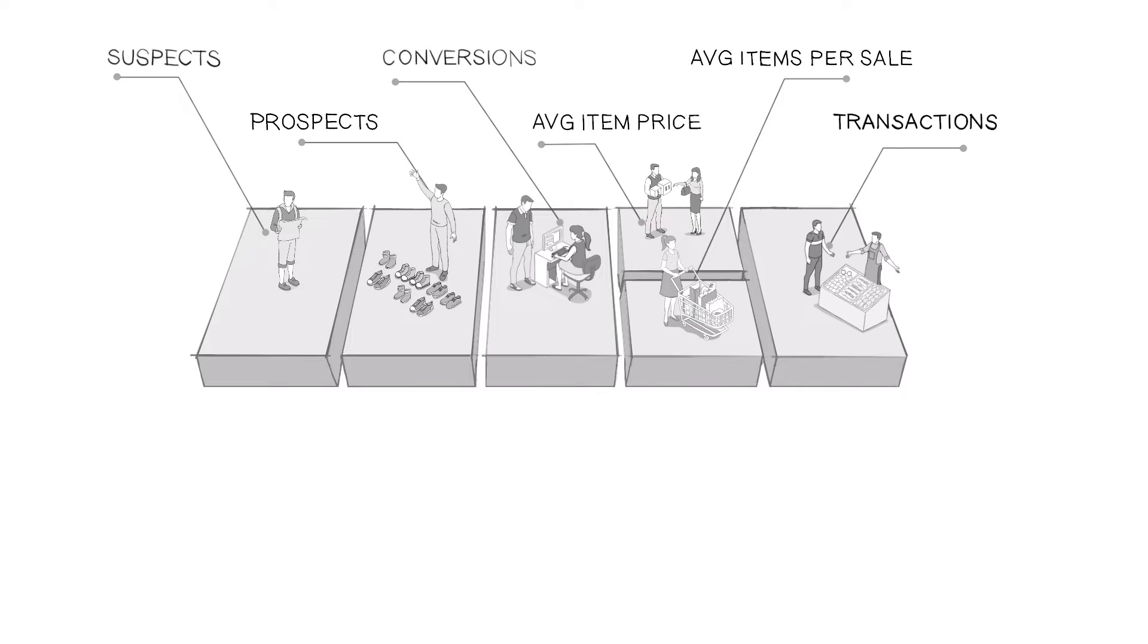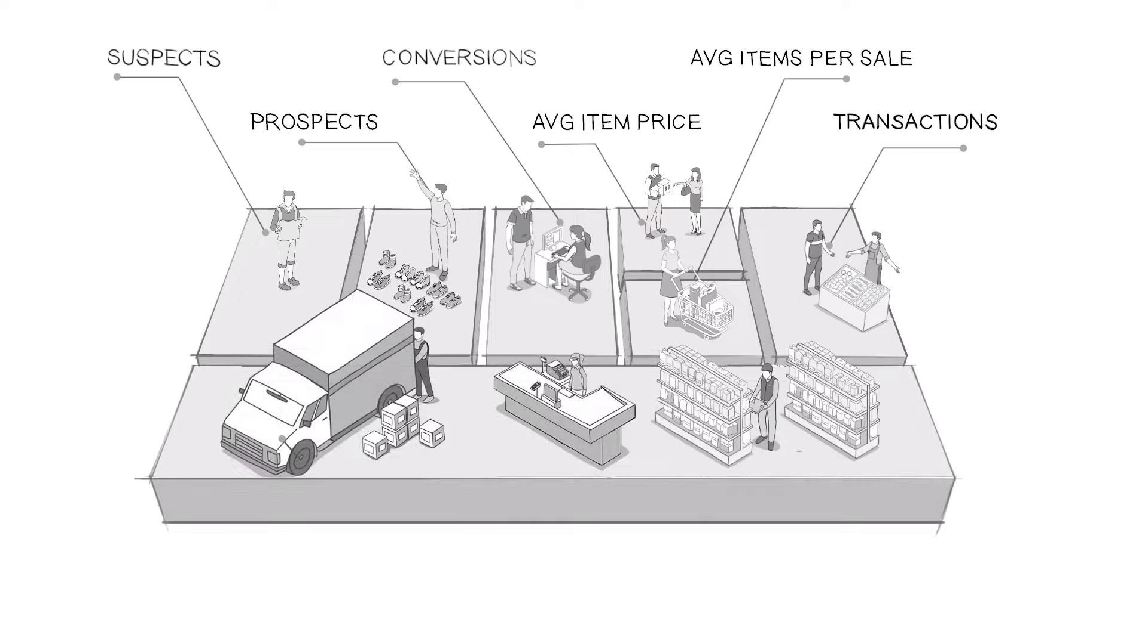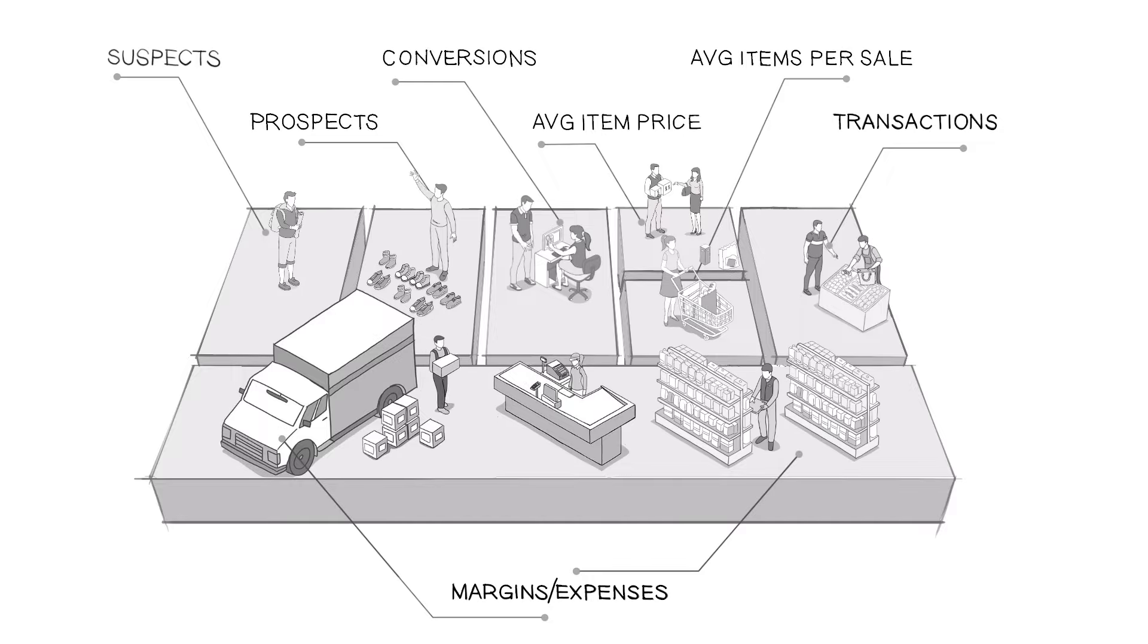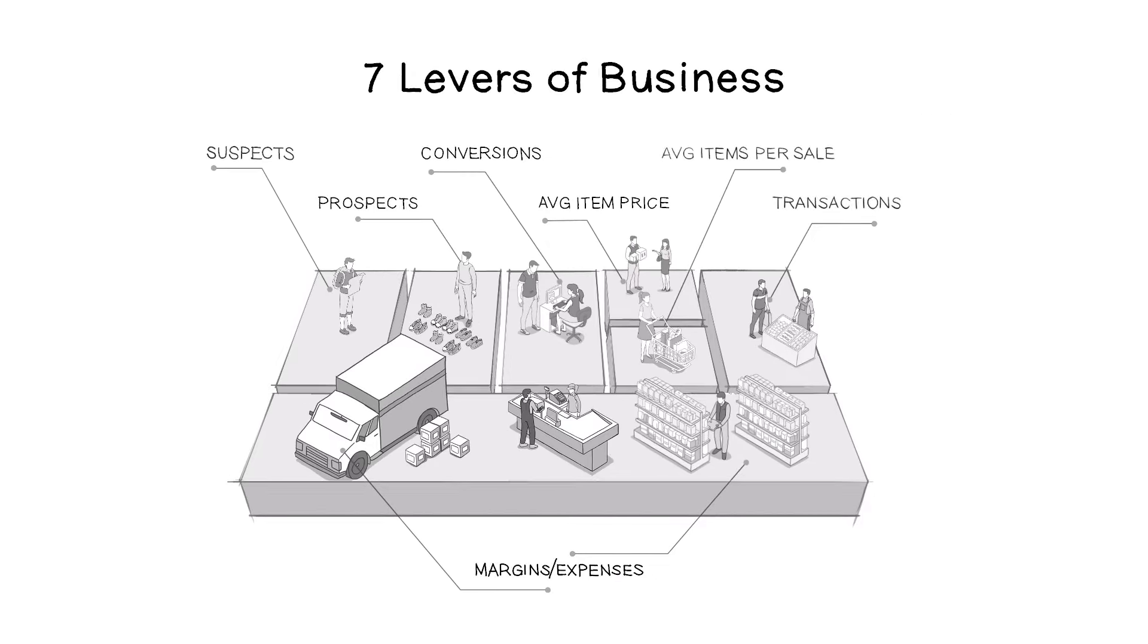The outcomes of these decisions determine your revenue. Subtract your expenses from that revenue and you're left with your margin, aka your profits. These six decisions, along with managing your expenses, are the seven levers of business and they are entirely in your control.